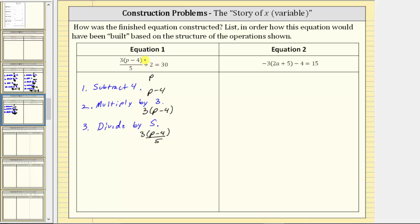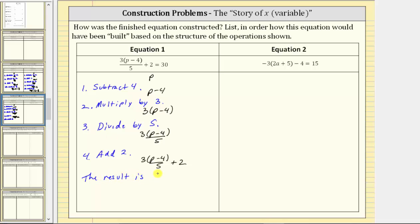And then after the quotient, we have plus two, which means step four is to add two to this quotient. If we add two, we have three times the quantity p minus four divided by five plus two. And because we have equals 30, the result of performing these operations is 30. So the result is 30, which gives us our final equation: three times the quantity p minus four divided by five plus two equals 30.